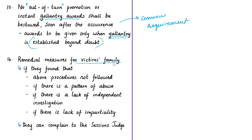If the victim's family finds that the above procedures were not followed, or if there is a pattern of abuse, lack of independent investigation, or lack of impartiality, they can make a complaint to the Sessions Judge who has territorial jurisdiction over the place of the alleged encounter. These guidelines are important for examination purposes — both the case law and the guidelines should be known for mains answers or essays on extrajudicial killings.